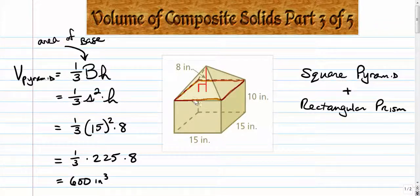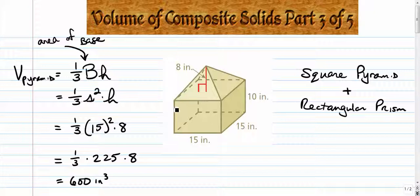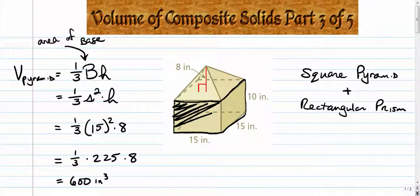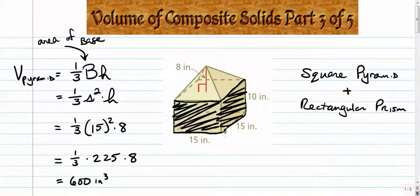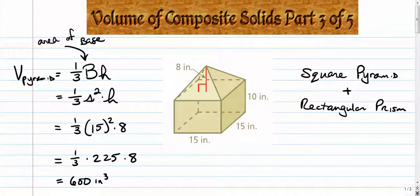Alright, the shape on the bottom, which of course is a rectangular prism. That is this shape down here. Alright, it's this whole thing. So we're trying to find the volume of this rectangular prism. This is kind of like the base of the pyramid. This is what the pyramid is sitting on top of.